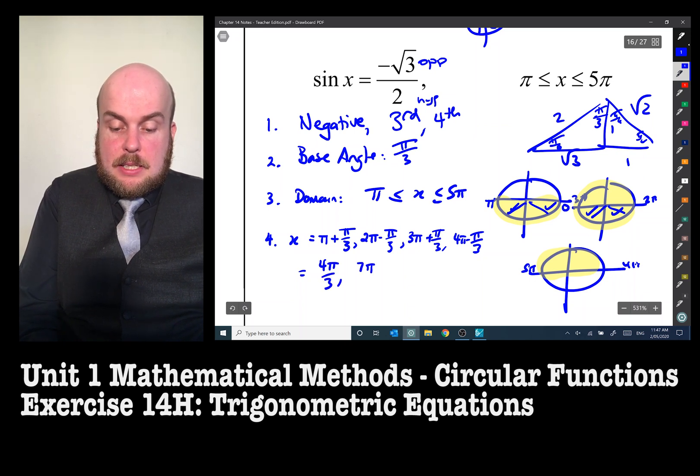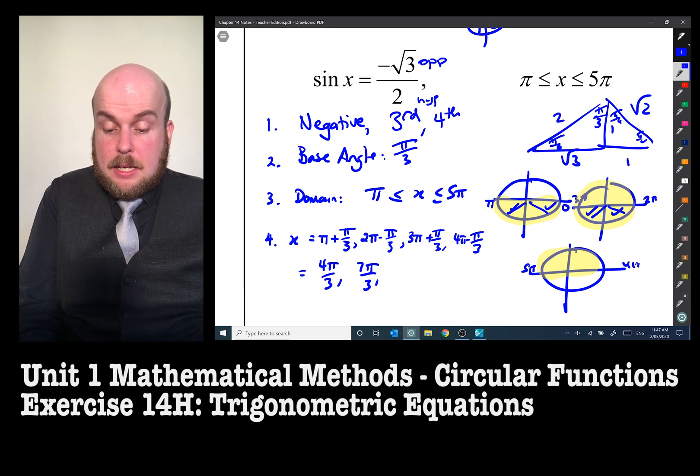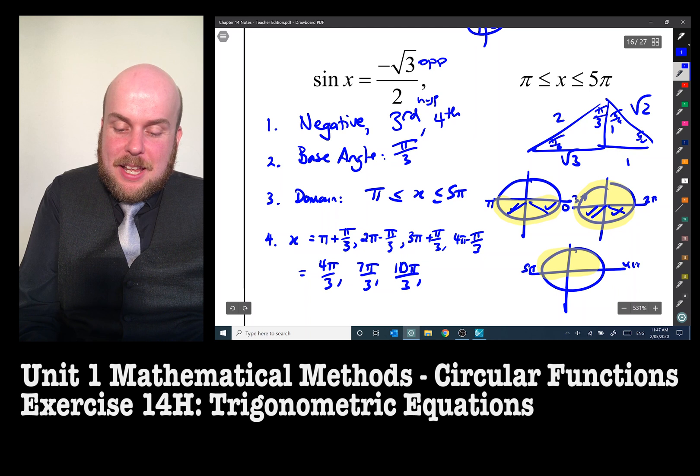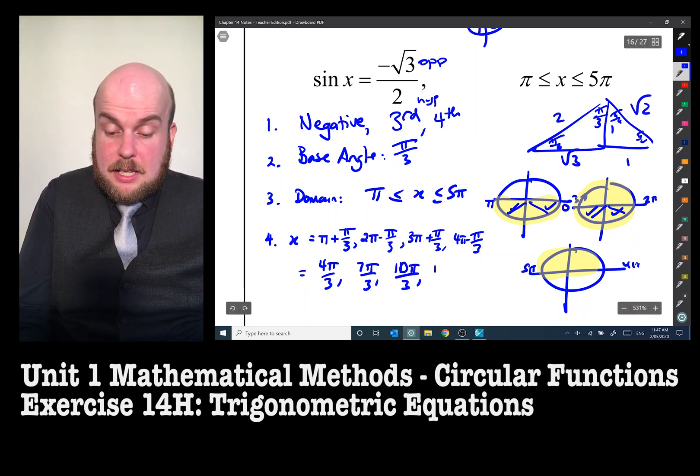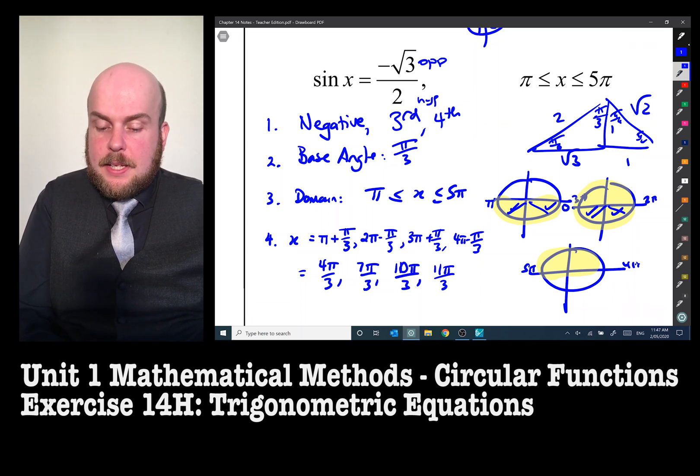Since from four pi to five pi, that's in the first and second quadrants where sine is positive, we don't need to worry about those. And so now I just need to neaten these up. So this becomes four pi on three. This becomes seven pi on three. This becomes 10 pi on three. And this becomes 11 pi on three. And there are our answers.